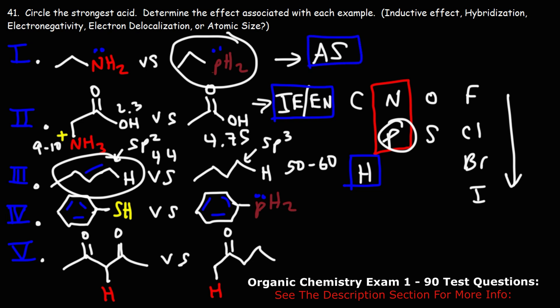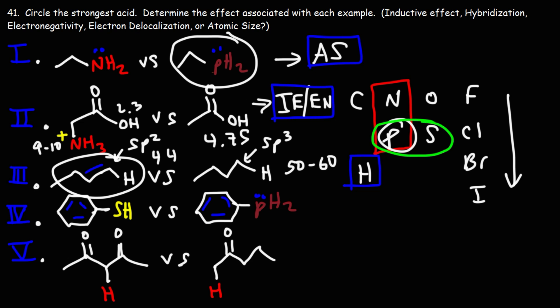For the fourth example, we're comparing sulfur and phosphorus. When you're comparing two different elements in the same row, there's only one reason it could be: electronegativity. Sulfur is more electronegative than phosphorus — electronegativity increases to the right. So the sulfur compound is the answer, and we put EN for the reason.